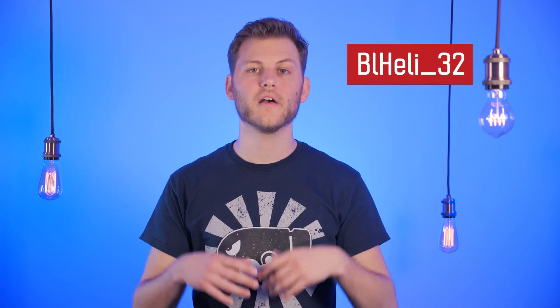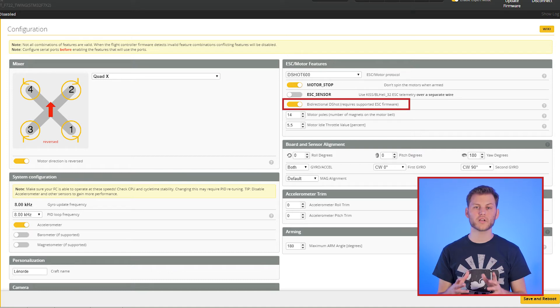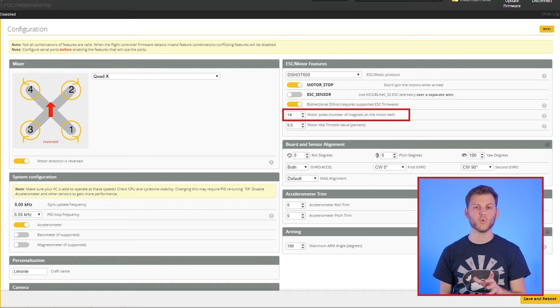If you don't know how to activate RPM filters, here is a quick reminder. If you have BL-Heli 32 ESCs, you can enable bi-directional DSHOT on the configuration page. Below that, you need to enter the amount of poles of your motors. You can find this value on the manufacturer page or by counting the number of magnets inside your motor.